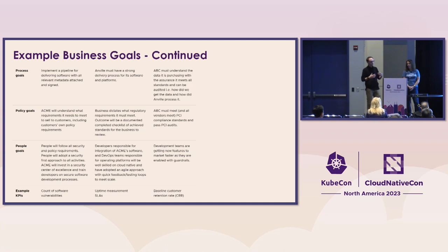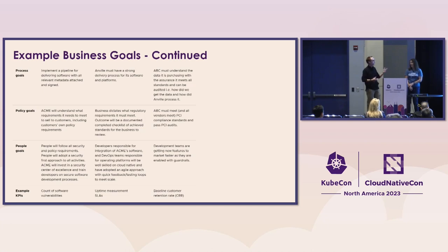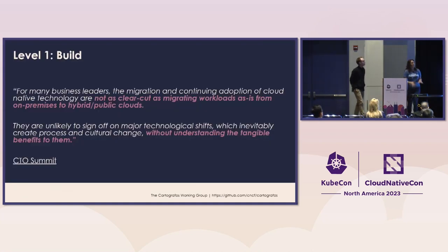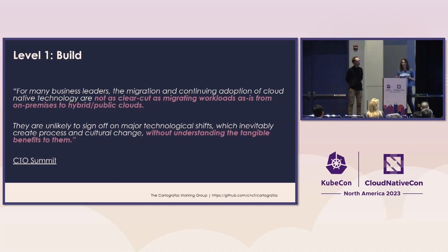Moving on, as we look further down that chart, we can see that process, policy, and people remain key dimensions. We're going to dig into each of the sections and the business outcomes — you can go look at them on the website and see all the different levels on the tech, policy, and people dimensions. It's definitely worth a read.